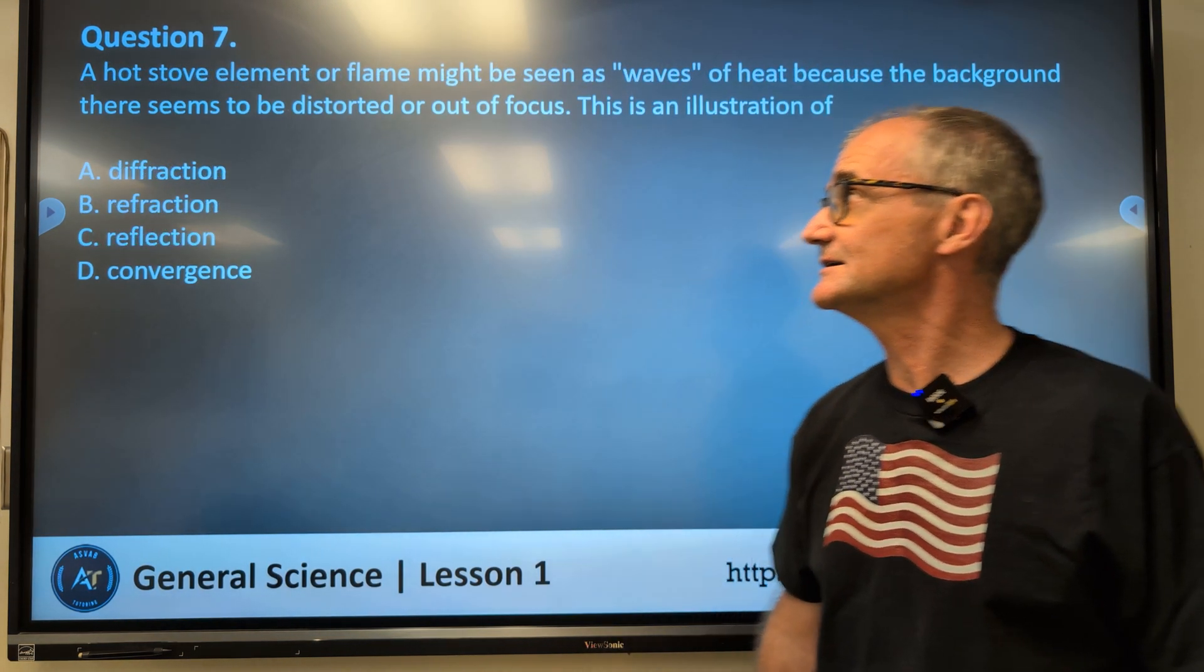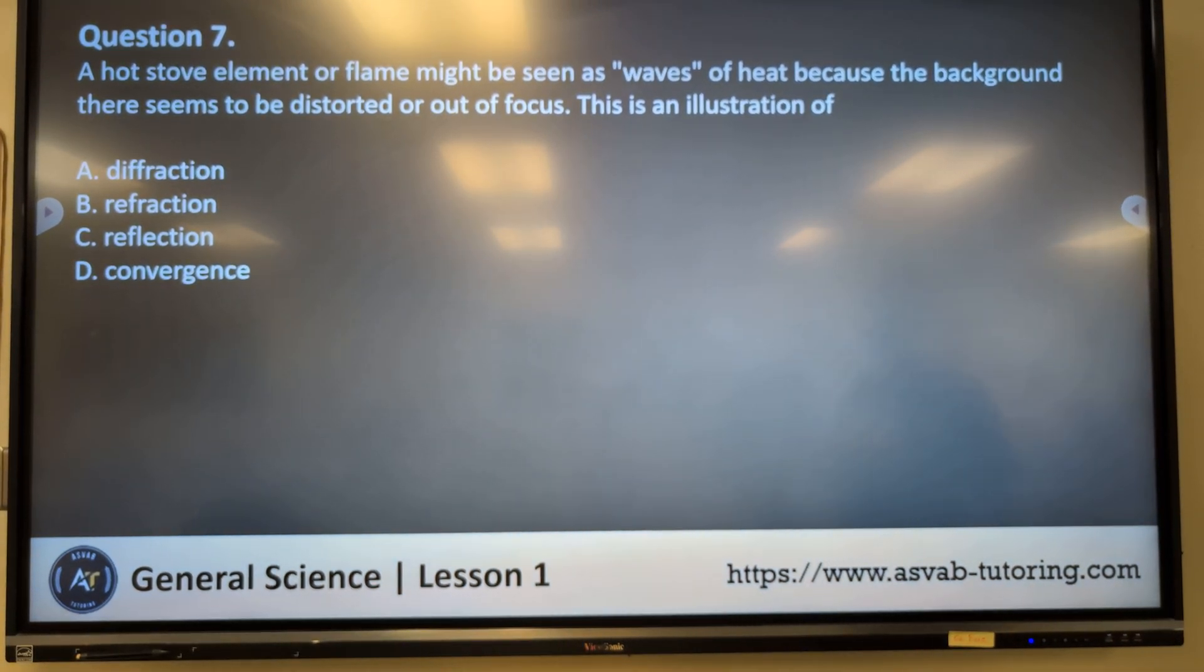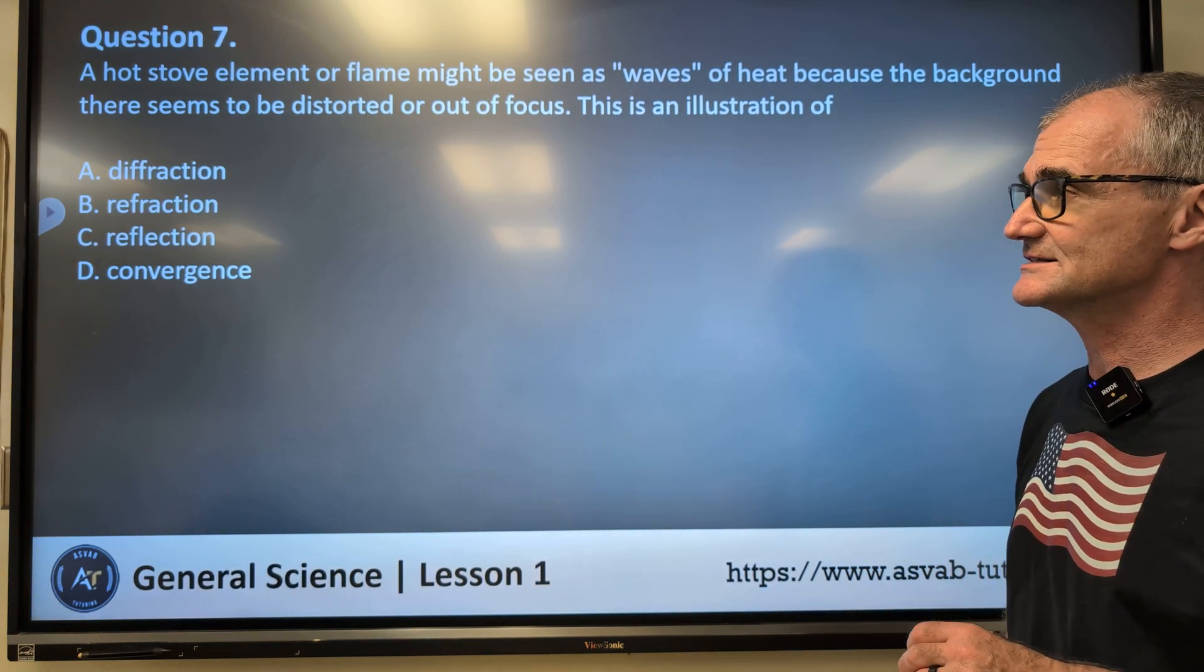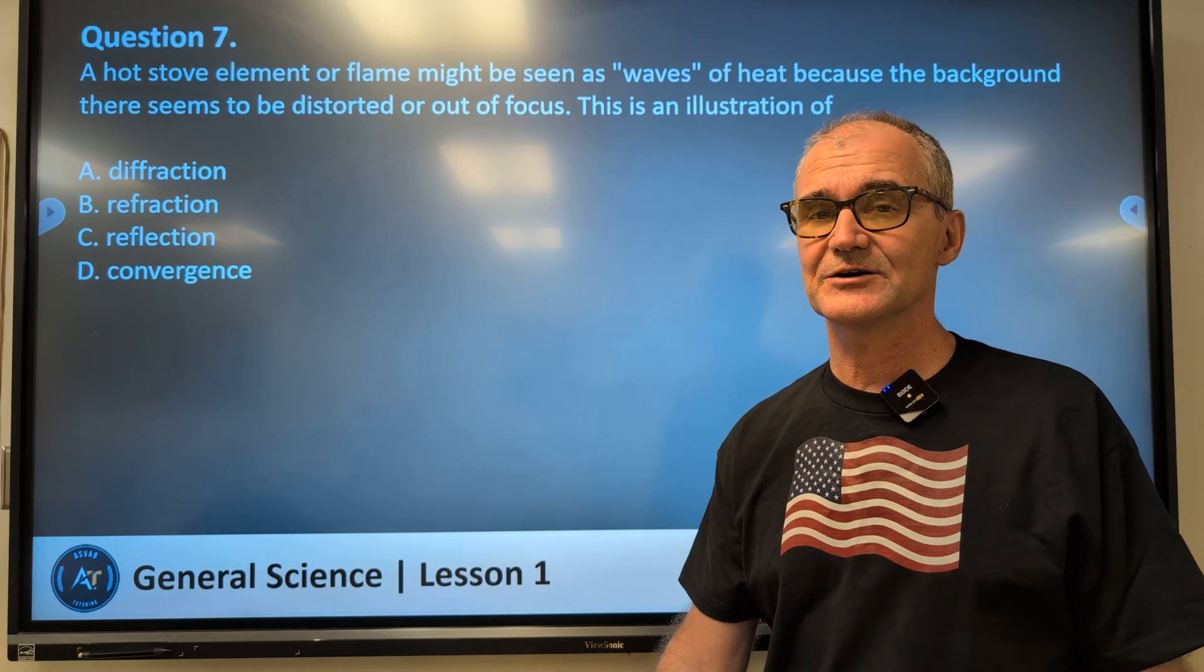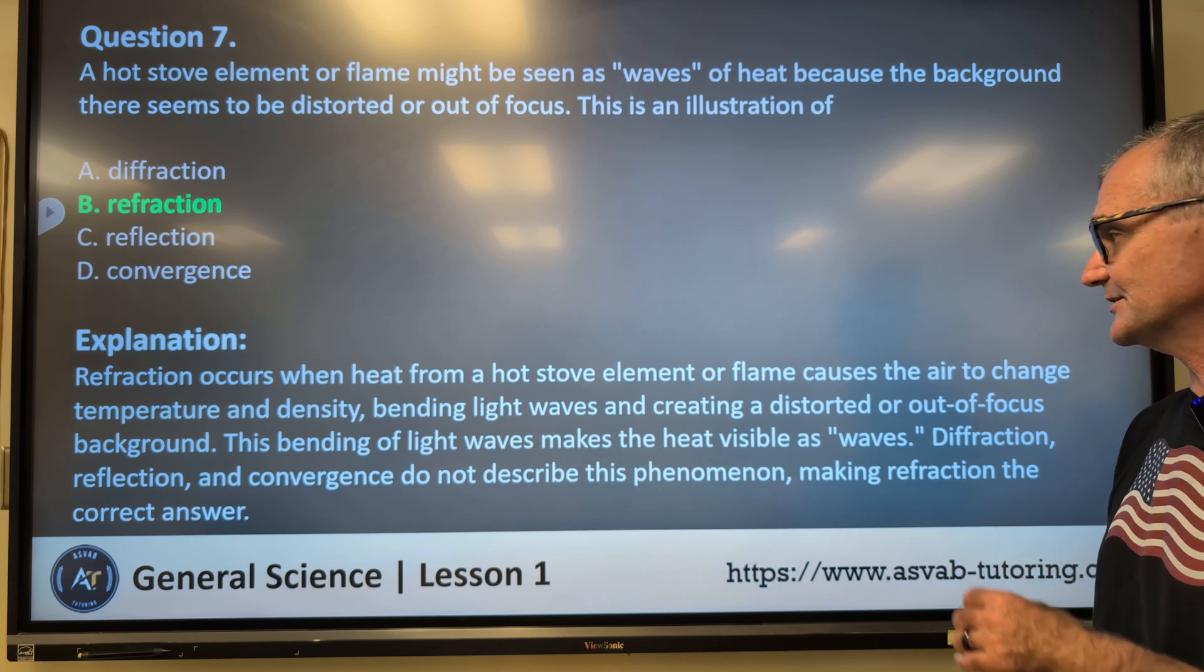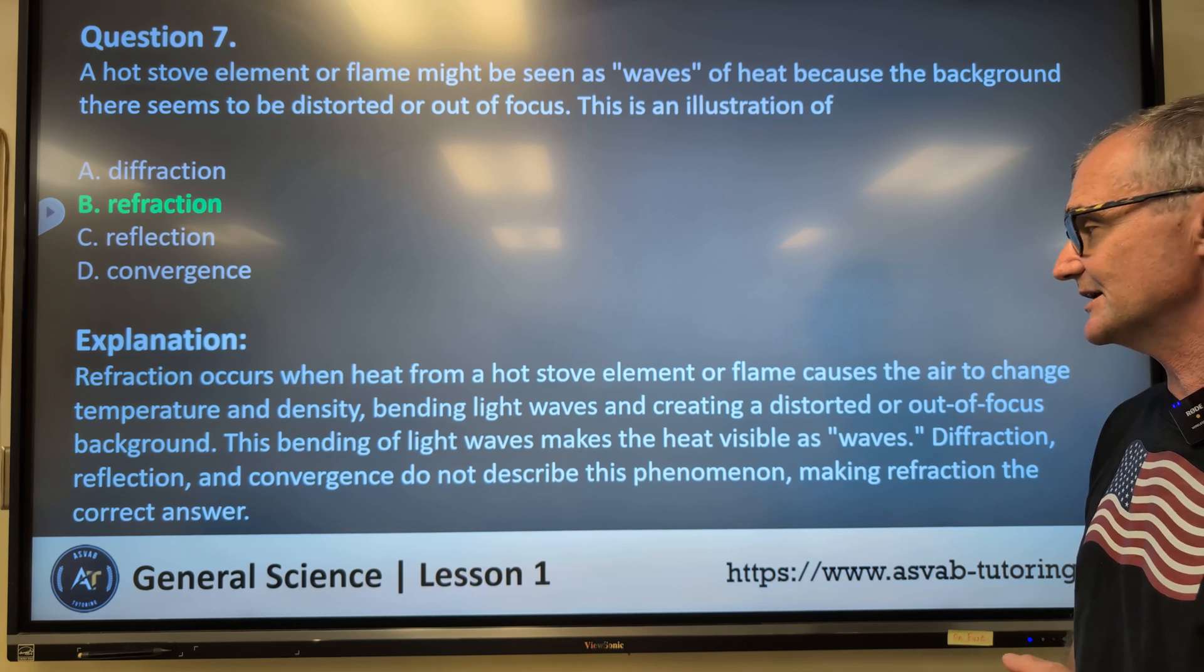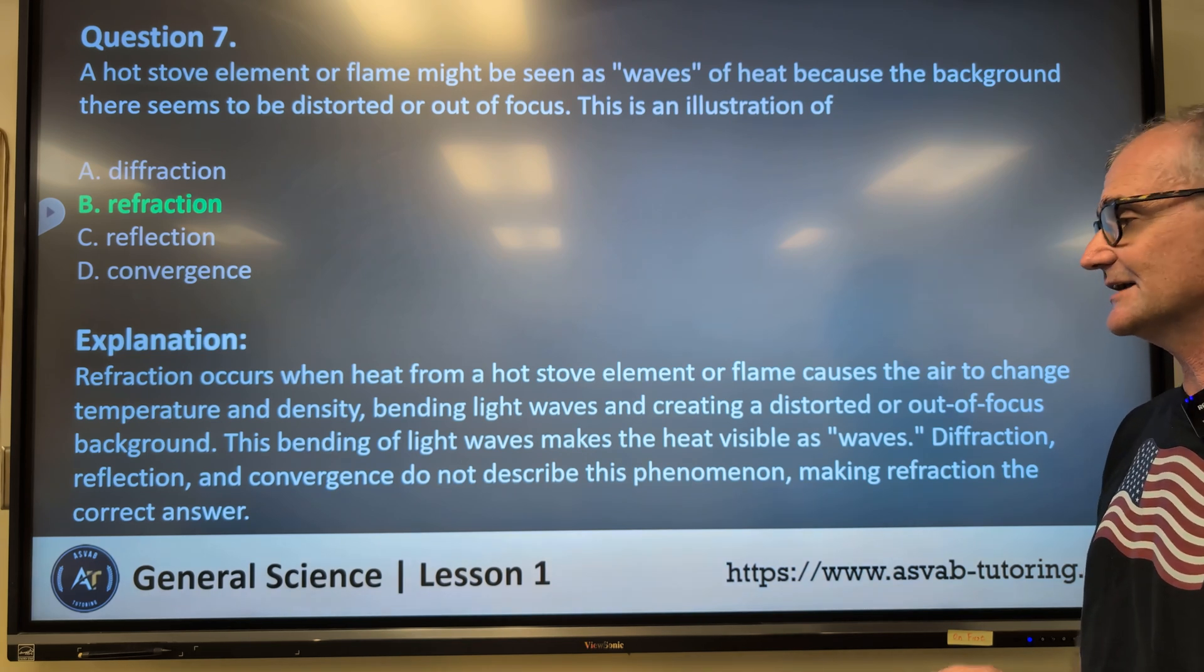Problem number seven. A hot stove element or flame might be seen as waves of heat because the background there seems to be distorted or out of focus. This is an illustration of diffraction, refraction, reflection, convergence. If you don't know all those words, write them down in your notebook and then look them up. Maybe watch a video or two on them. Correct answer here is B, refraction. Refraction occurs when heat from a hot stove element or flame causes the air to change temperature and density, bending light waves and creating a distorted out of focus background. The bending of the light waves makes the heat visible as waves.